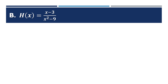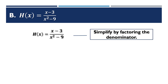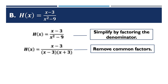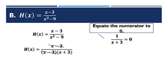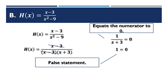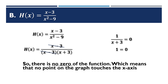Example 2: h(x) = (x minus 3) over (x² minus 9). Factor the denominator: (x minus 3)(x + 3). Remove the common factor (x minus 3) to get 1 over (x + 3). Equating the numerator to 0 gives 1 = 0, which is a false statement. Therefore there is no zero of the function, meaning no point on the graph touches the x-axis.